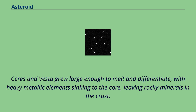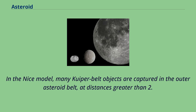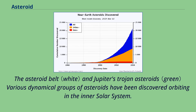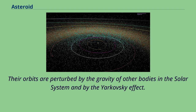Ceres and Vesta grew large enough to melt and differentiate, with heavy metallic elements sinking to the core, leaving rocky minerals in the crust. In the NICE model, many Kuiper belt objects are captured in the outer asteroid belt at distances greater than 2.6 astronomical units; most were later ejected by Jupiter, but those that remain may be the D-type asteroids, and possibly include Ceres. Various dynamical groups of asteroids orbit in the inner solar system; their orbits are perturbed by the gravity of other bodies and by the Yarkovsky effect.